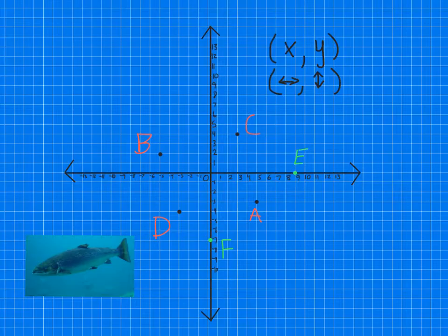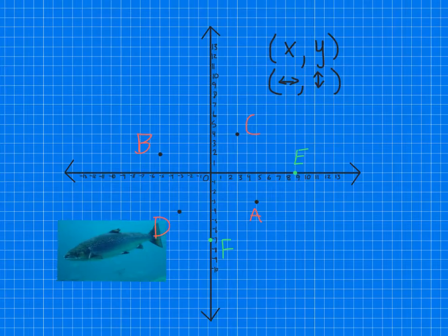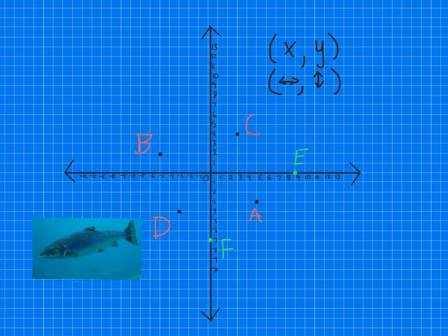Alright, so last thing I want to do is give you a chance to check yourself. So remember, it's xy, which is how far across, then how far up and down. We write it like this with the parenthesis and the comma between the first number and the second number. So first thing is I have this little fish here. See my little guy? He's in the ocean.